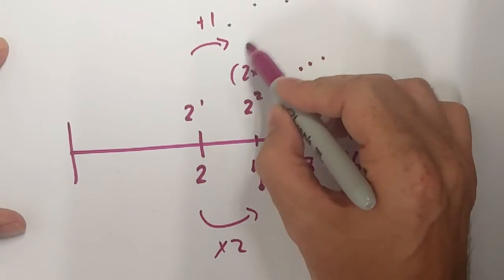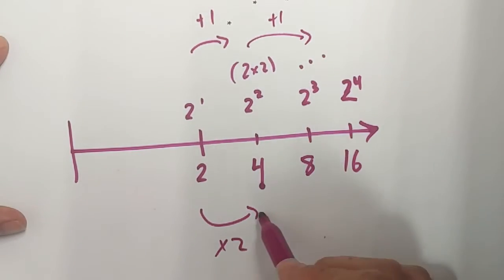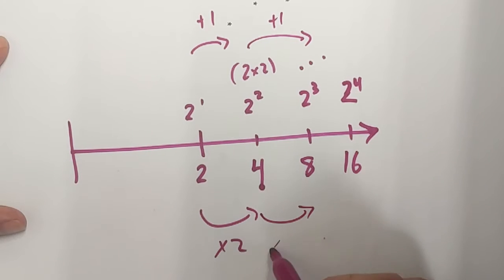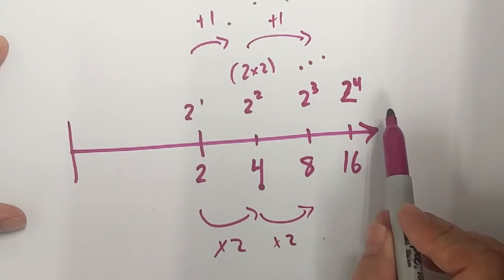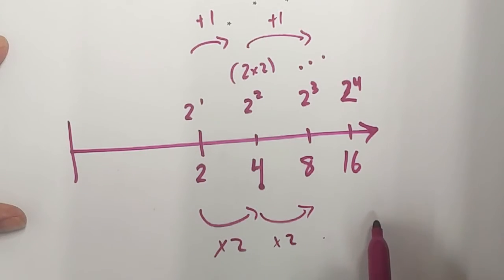And then this one here, the exponent is plus 1, so that means down here, it's going to double again. So every time the exponent increases by 1, my value actually doubles.